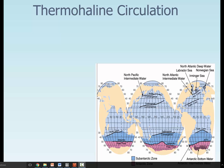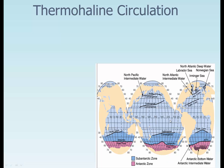This is the last section for Unit 7 on circulation of water — surface currents — and this is going to be the density currents. These will be the ones that move up and down due to different densities caused by temperature and salinity.